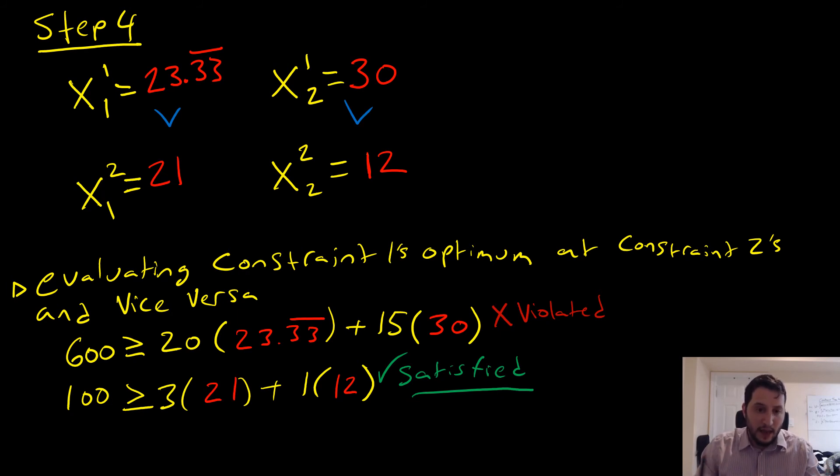If we were to go and then take this and plug this into our constraints, like meaning one for constraint one, the optimum that we get there, we're going to plug that into constraint two. And for constraint two's optimum, we're going to plug that into constraint one. And we're going to check if those constraints are satisfied. What we end up with is a case where we have constraint one's optimum that's going to violate constraint number two. So this here is violated. That's what we have down here, but constraint number two is going to be satisfied at constraint one's optimum. So I can tell you right away